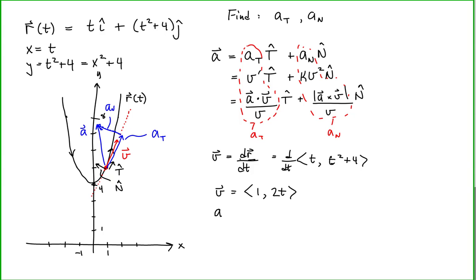The acceleration is the derivative of the velocity with respect to t, so we take the derivative of the vector (1, 2t). This gives us a vector with components 0 for the x-component and 2 for the y-component. This gives us our acceleration relative to the x and y axes.